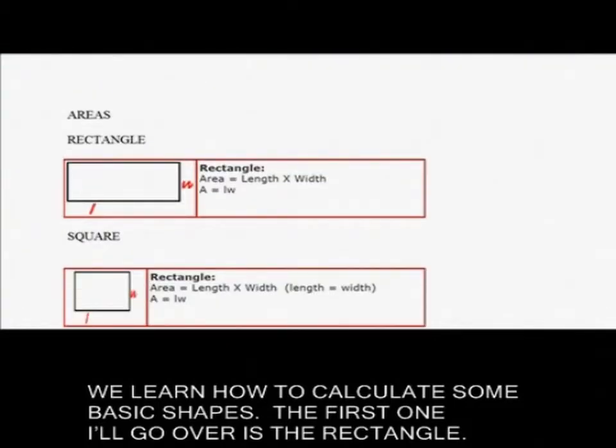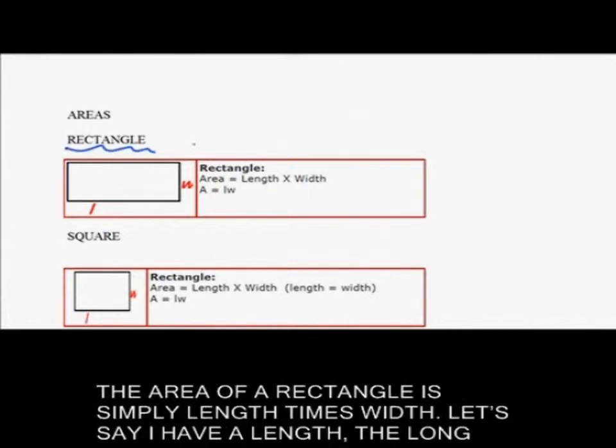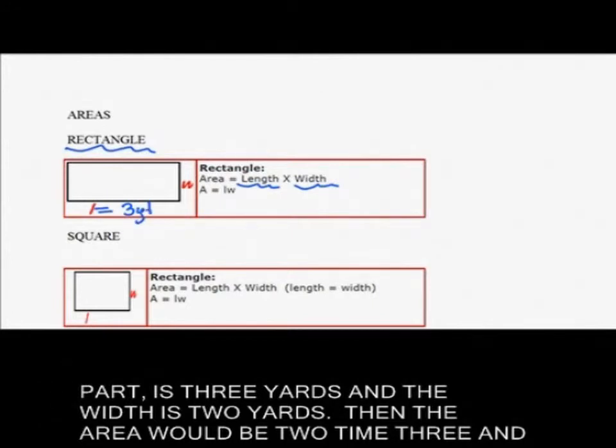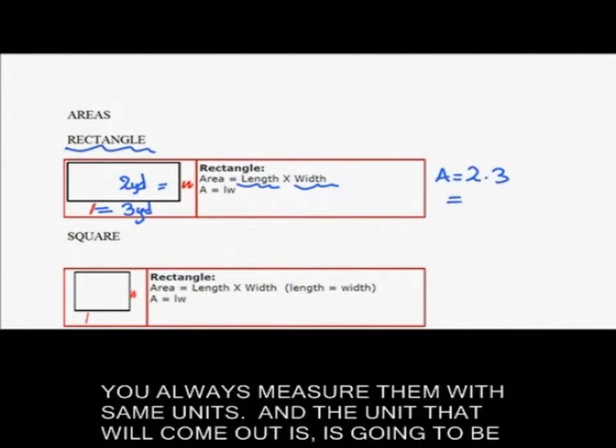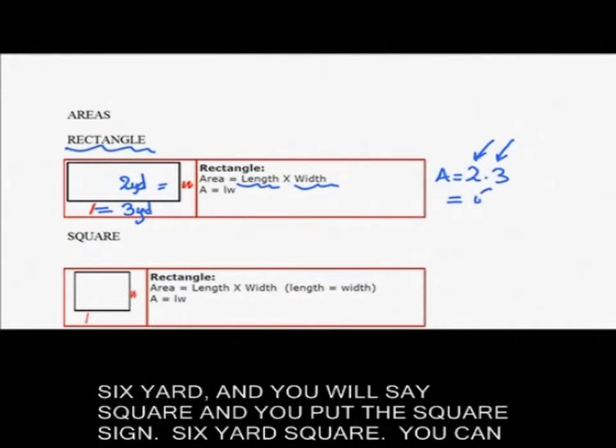The first one I'll go over is the rectangle. The area of a rectangle is simply length times width. Let's say I have a length, the long part, as three yards and the width is two yards. Then the area would be two times three, and you always measure them with same units, and the unit that will come out is six yard square.